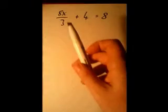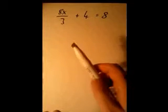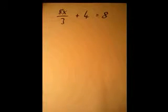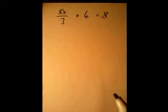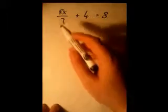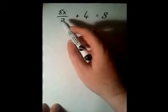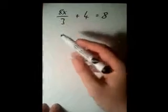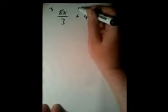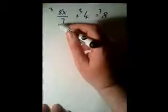You could start by getting rid of the constant term, but generally when I have an equation with fractions, the first thing I always want to do is get rid of those fractions, because that's what complicates the process. A simple way to get rid of a fraction is to multiply the equation by a number that the denominator will divide into. The denominator here is 3, and 3 obviously divides into 3, so we multiply the whole equation by 3.